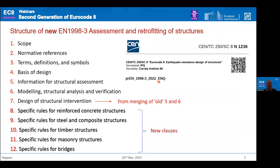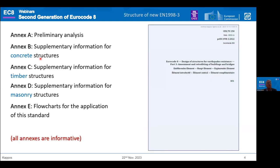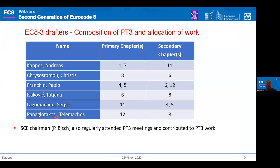In addition to the main clauses 1 to 12, we have, as usual in the Eurocodes, a number of annexes. All of them are informative: one on preliminary analysis, one with supplementary information for concrete structures, one for timber structures, one for masonry structures. There is also something that — unless I'm mistaken — you cannot find in other parts of the code: a series of very nice and useful flowcharts for the application of this standard.